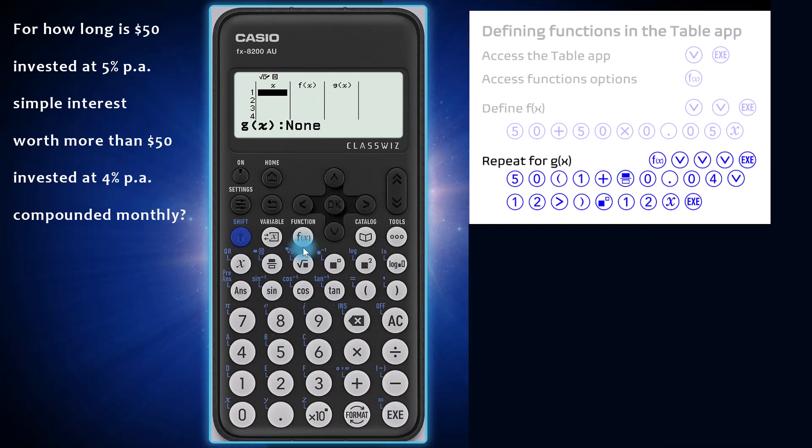Now I'll return to the functions key to define g of x by repeating this process. g of x is equal to 50 by 1 plus 0.04 over 12 all to the power of 12x as per the compound interest formula with monthly compounding periods.